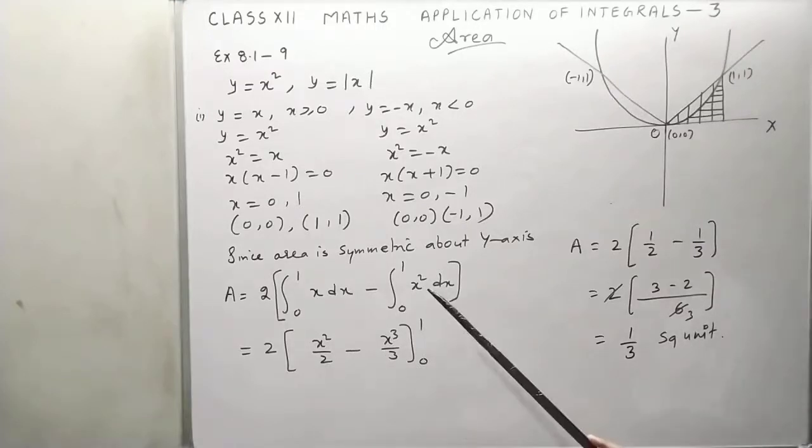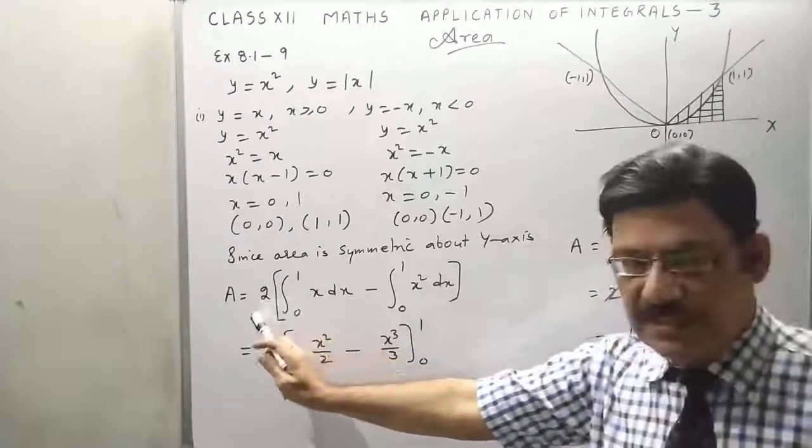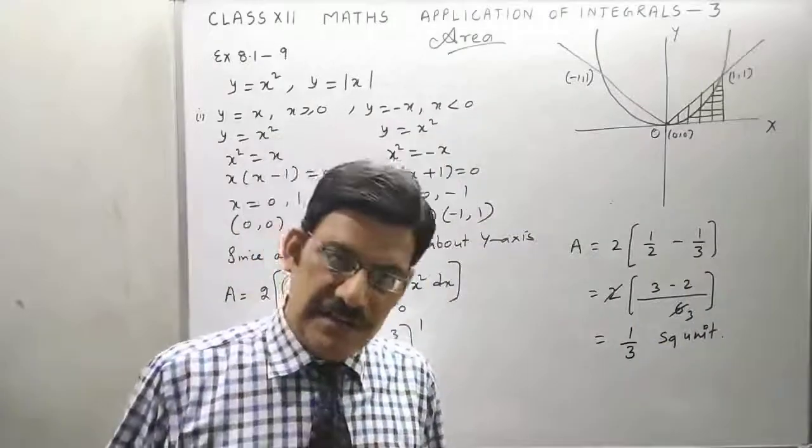1 by 2 minus 1 by 3, this is 1 by 3 square unit. So we have to find area of both the parts, but we have double this because the area is symmetric about y-axis.